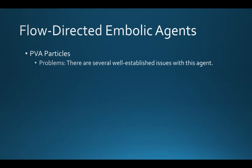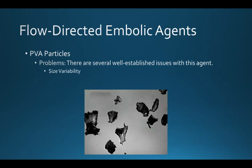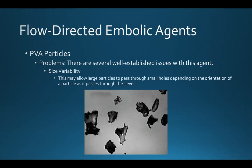One interesting discussion about particulate PVA concerns the well-established issues known to occur with this agent. First, there's size variability, which is a manifestation of the manufacturing process. Under a microscope, PVA particles are of different shapes, configurations, and sizes. The problem is that this may allow larger particles to pass through small holes depending on the orientation of the particle as it passes through the sieves. You can see that if a particle passes through one way, it will go through different size holes than if it passes through the other way.